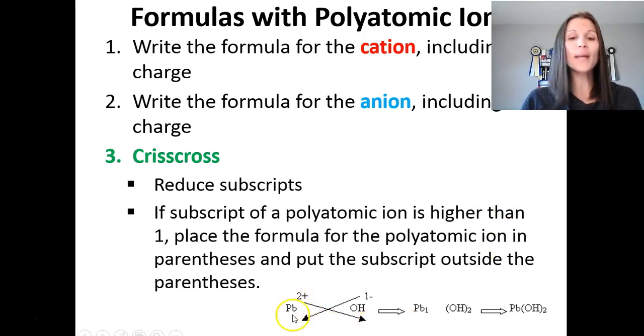For example, if we have lead with a charge of two plus, and hydroxide as a polyatomic ion has a one negative, that one comes down to the lead, the two comes over to the hydroxide. But, since we need two of that entire ion, we put it in parentheses or brackets. Notice it comes down over here. Remember, the one disappears, and it would become Pb(OH)2.